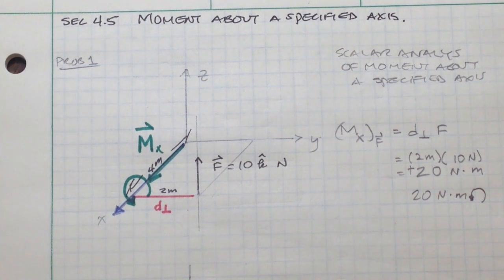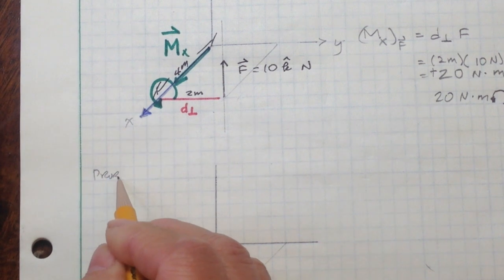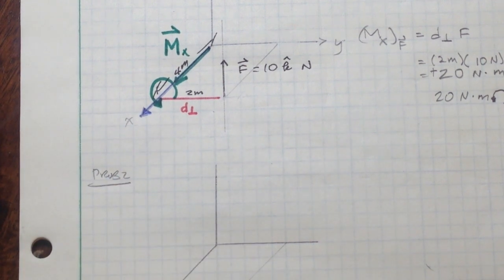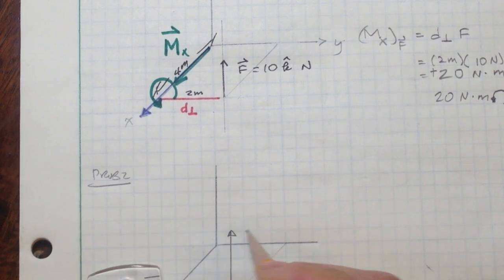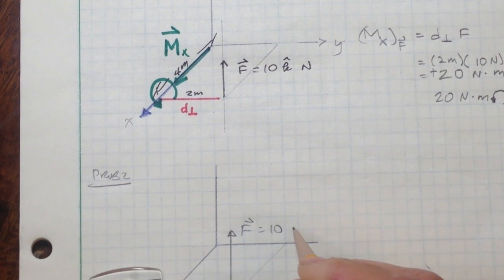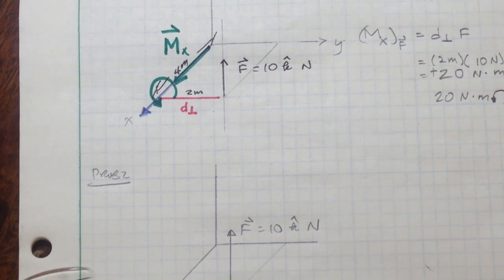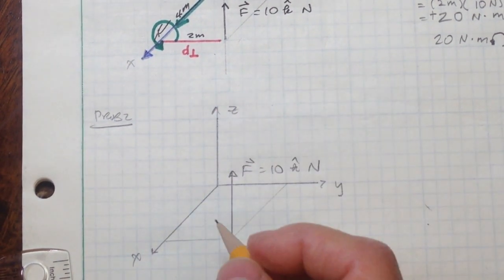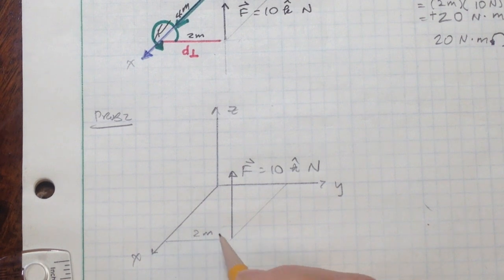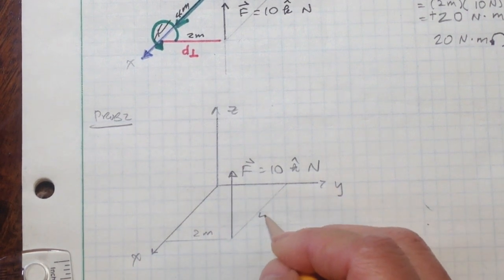Let's do problem number 2. We'll use the same force in the same location. Force F has a magnitude of 10 newtons and is directed in the z direction. The x-axis, y-axis, and z-axis are labeled. Again, this dimension is 2 meters and this right here is 4 meters.